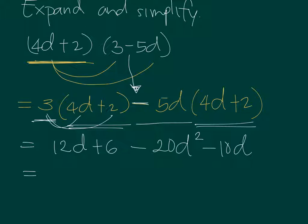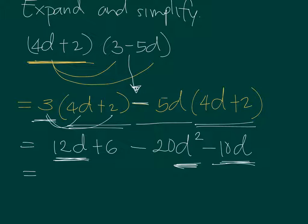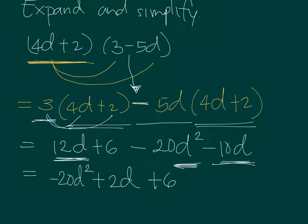After performing the distributive law, look for expressions that can be combined. Only like terms — those with the same letters and same exponents — can be combined. D squared is not similar to 10D because their exponents differ. So only 12D and minus 10D combine to give plus 2D. The negative 20D squared and the 6 remain as they are. That is the expanded and simplified form of (4D + 2)(3 − 5D).